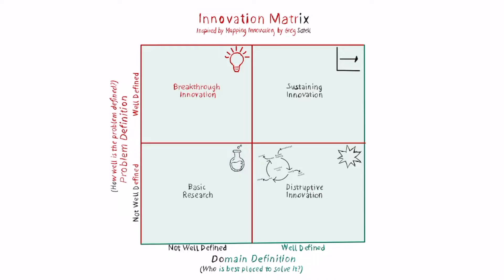We're going to use this matrix to frame the problem of technological innovation. Before we move forward, it's important to distinguish between technical innovation and business innovation. Technical innovation is really about bringing new technologies to the development stage and then to market. Business innovation is more about how to bring them to market and how to scale them up.